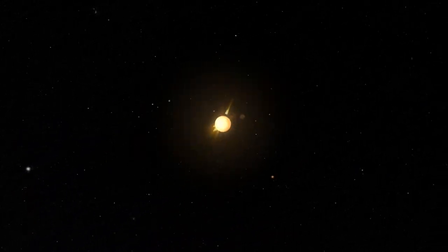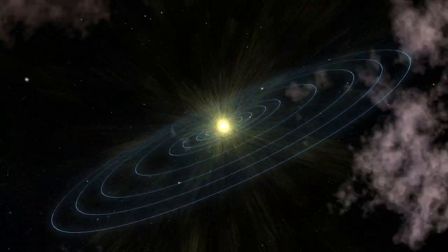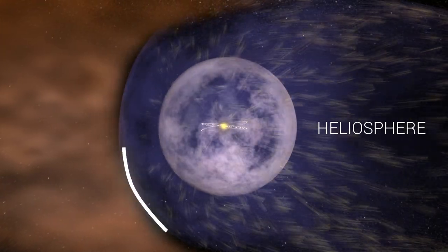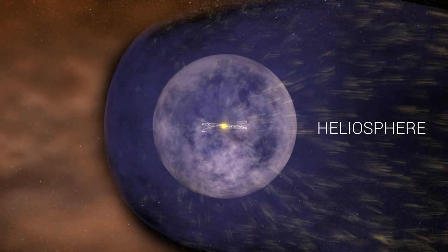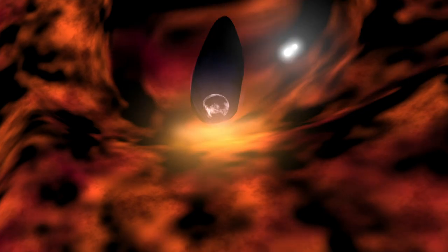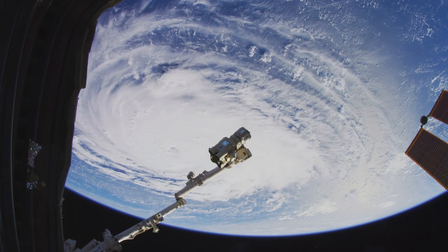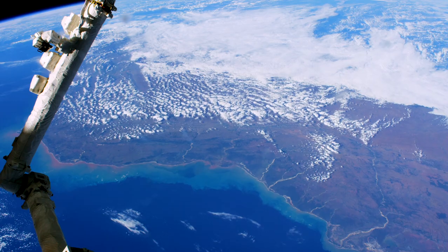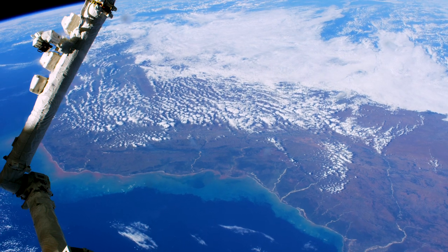The wind forms a giant protective bubble around our solar system known as the heliosphere. This huge region surfs through the Milky Way, shielding us from interstellar radiation and creating an environment that helps life on Earth to flourish. But its borders aren't fixed.